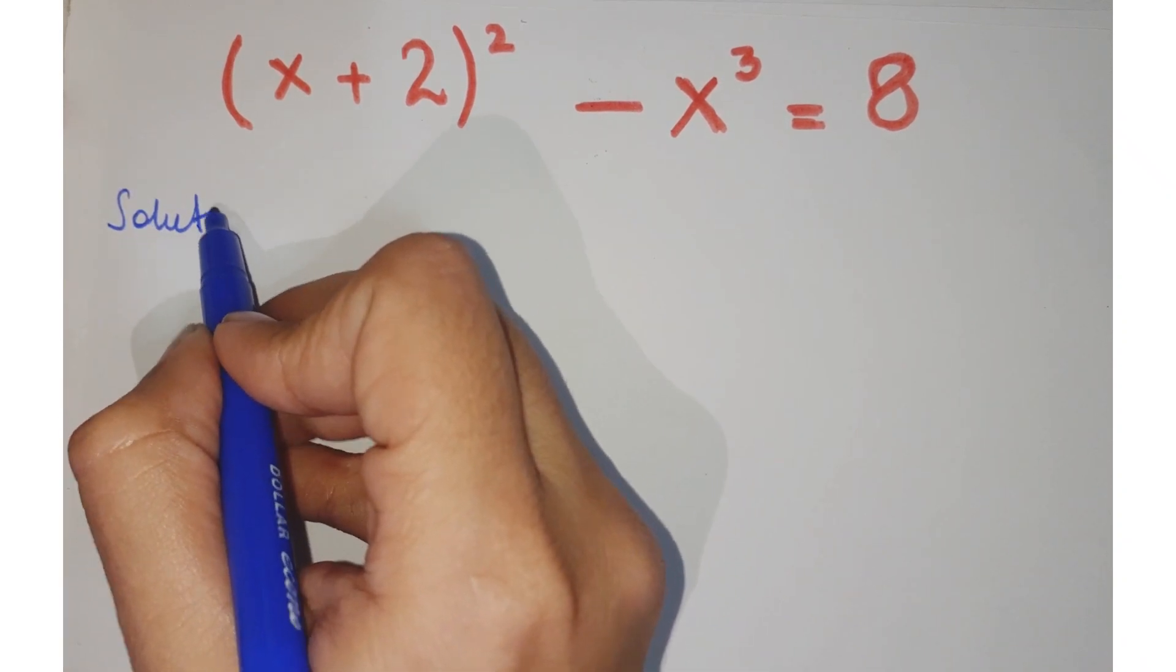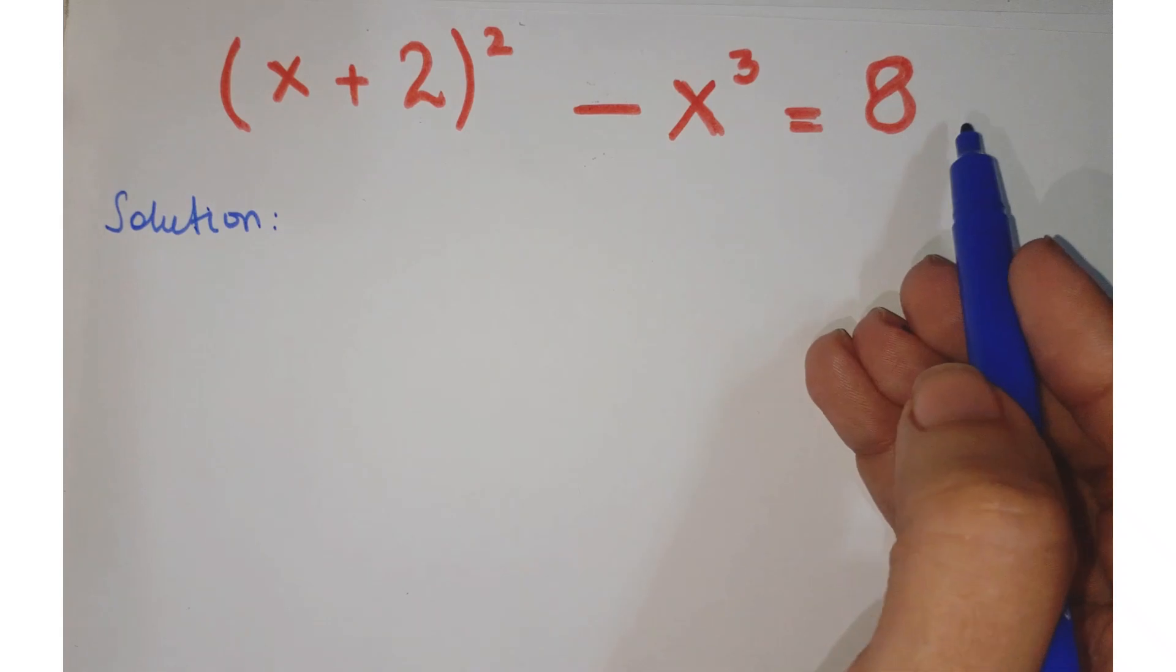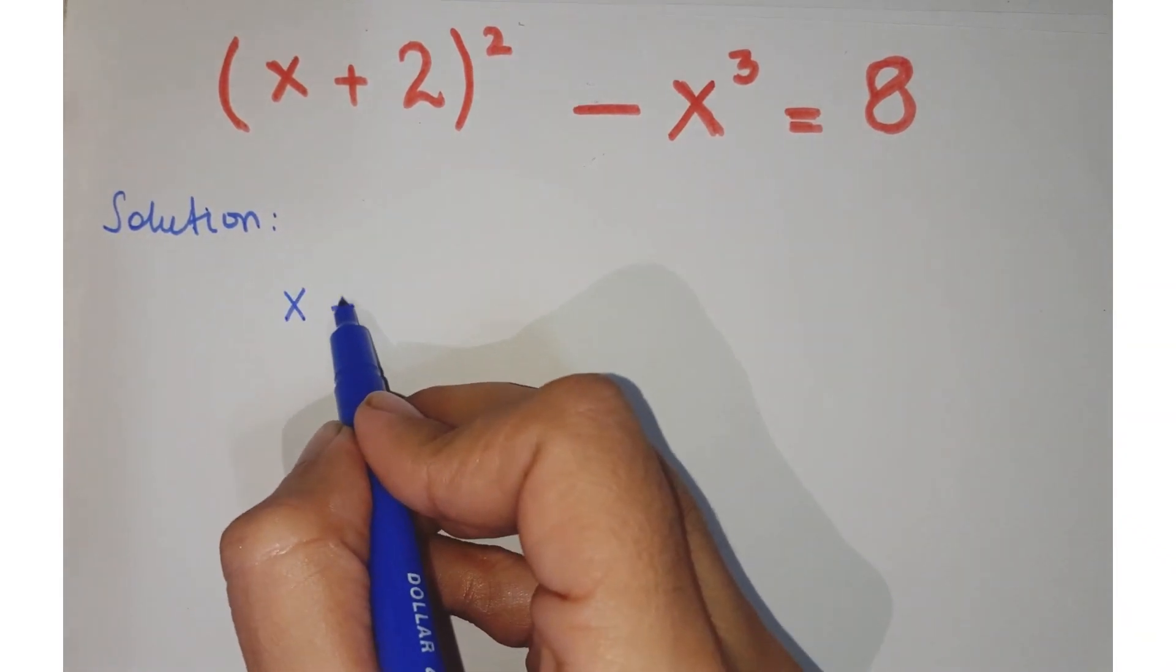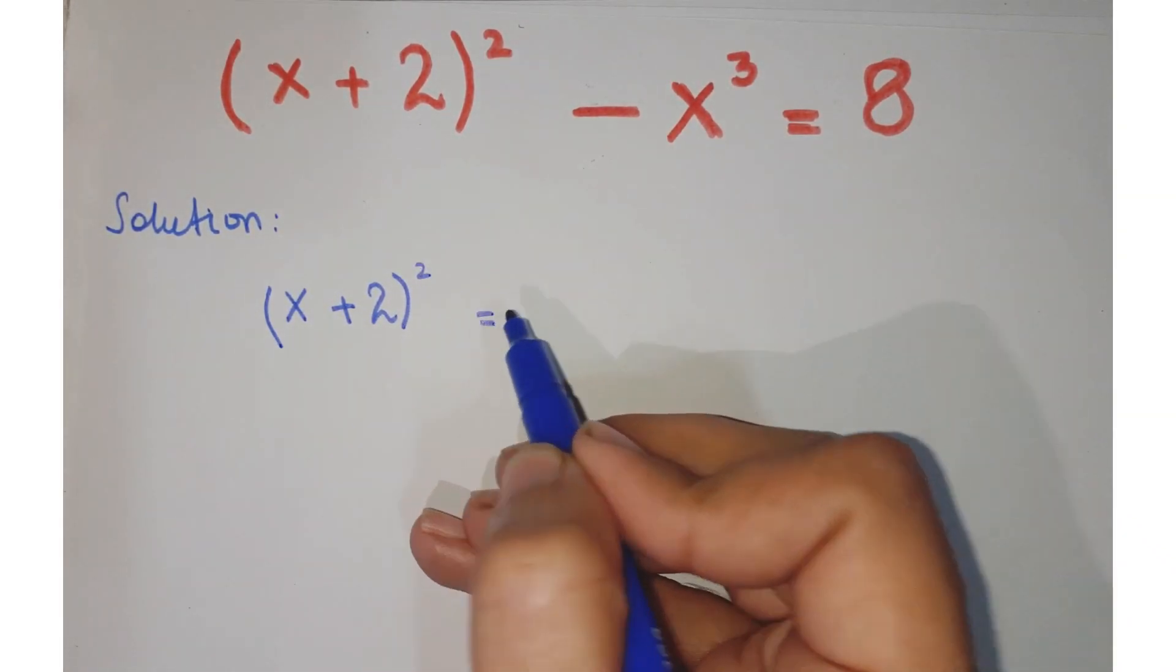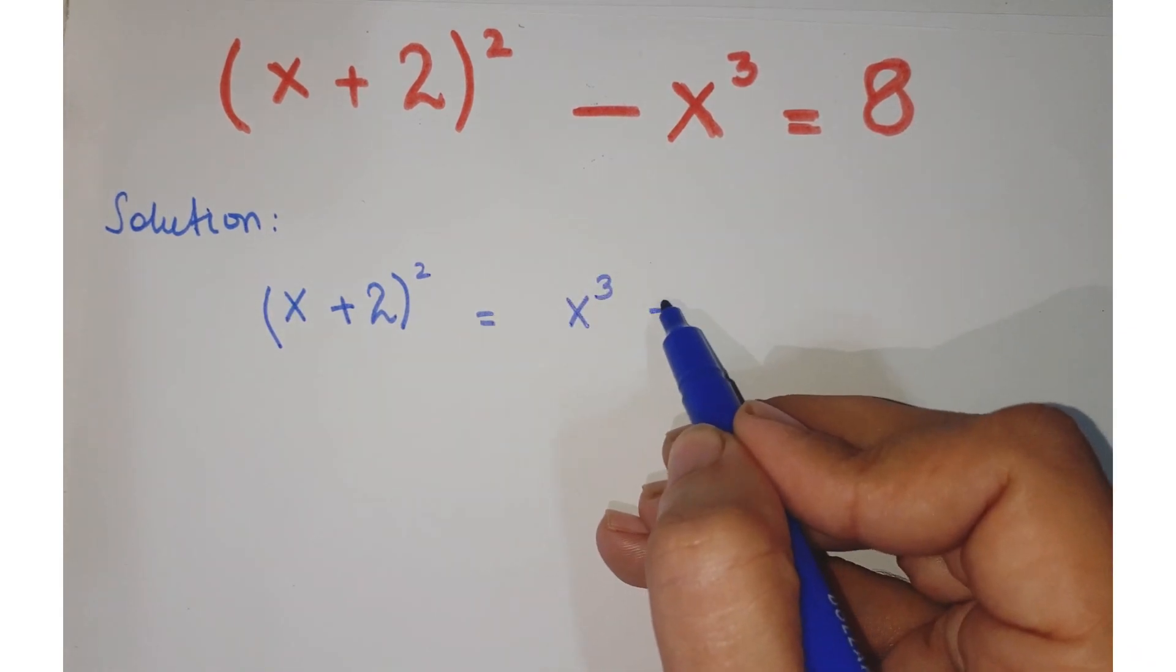Let's see how we proceed in this question. Just move x³ to the right hand side. So we have (x+2)² = x³ + 8.